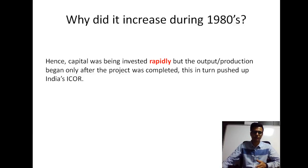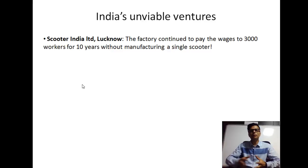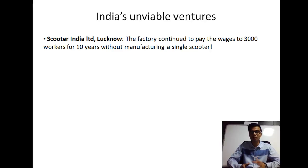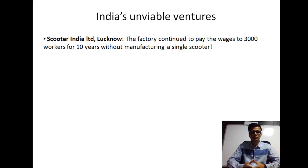There was a public sector unit called Scooter India Limited in Lucknow. This case is really interesting — the factory continued to pay wages to three thousand workers for ten straight years without manufacturing a single scooter. If a country has a number of factories like Scooter India Limited, it obviously becomes inefficient, because you are putting in so much capital and output is zero.